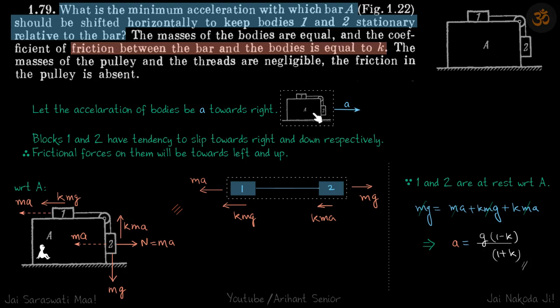So we need to move the whole system towards right with let's say some acceleration A and minimum value of that we need to find out. So let the acceleration of bodies be A towards right.